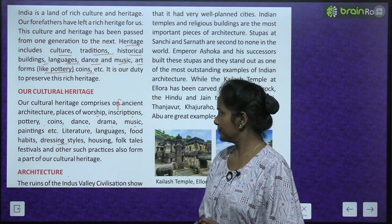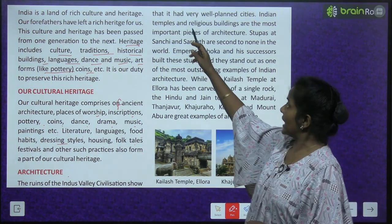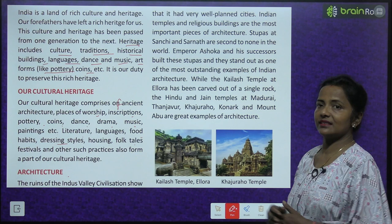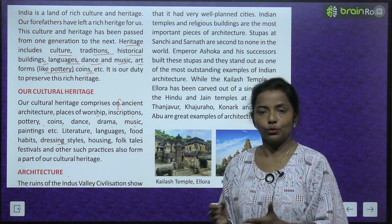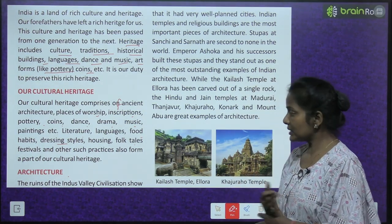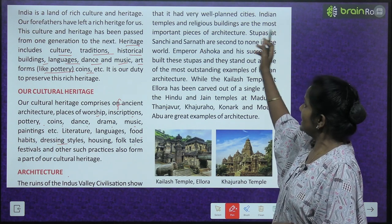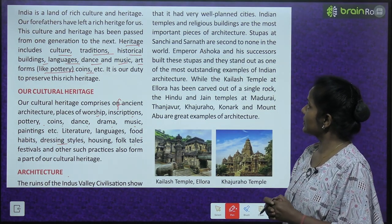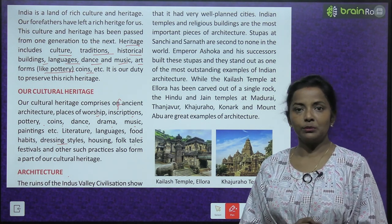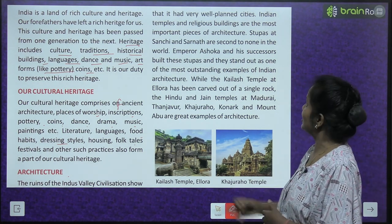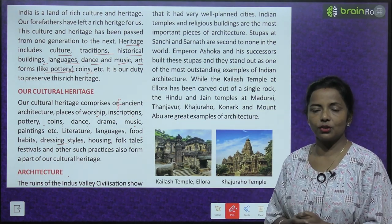Next is architecture. The ruins of the Indus Valley civilization show that it had very well-planned cities. Indian temples and religious buildings are the most important pieces of architecture. Jo religious buildings hain, jo temples bane hain — those are a part of architecture.